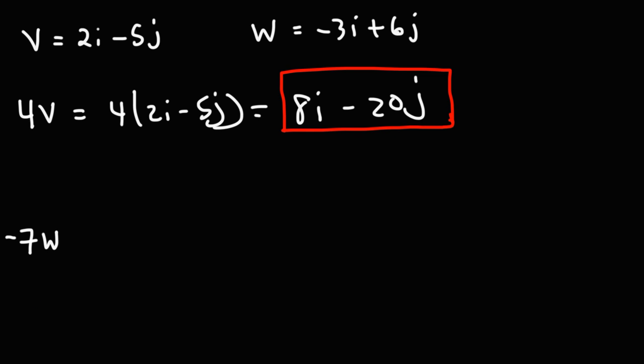For the next one, we have negative 7W. So it's negative 7 times negative 3i plus 6j. So we need to distribute negative 7 times negative 3i. That's positive 21i. And then negative 7 times 6j is going to be negative 42j.